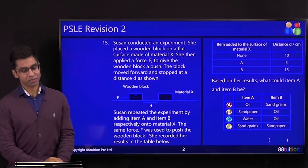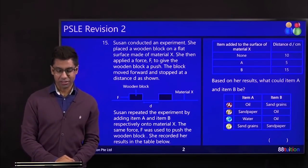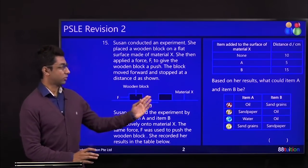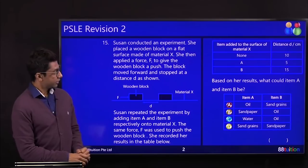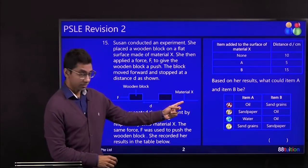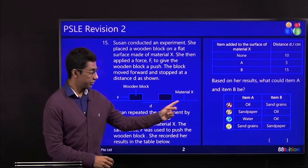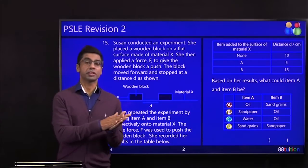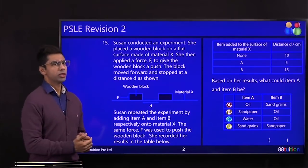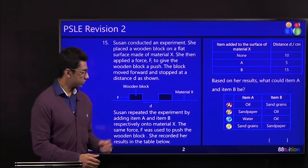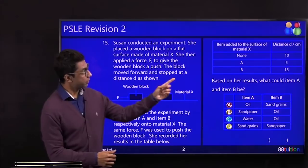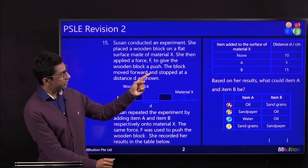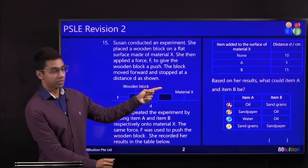Susan conducted an experiment. She placed a wooden block on a flat surface made of material X. So you know what she did, right? She pushed the box or the wooden block towards the right. What is this material X? Is it wrongly labeled or is it referring to the surface? It's referring to the surface, right? So you got a wooden block and it's rubbing against material X.